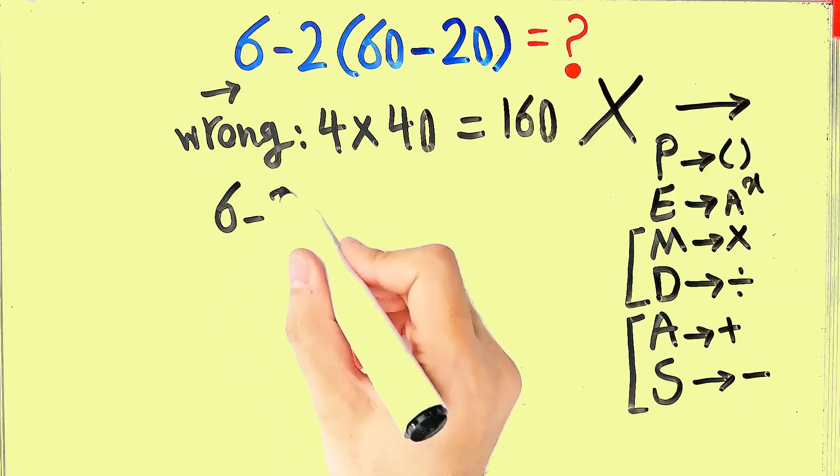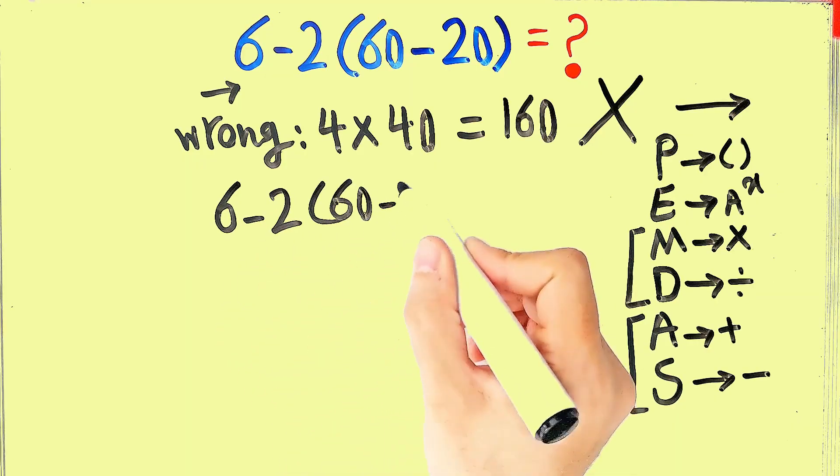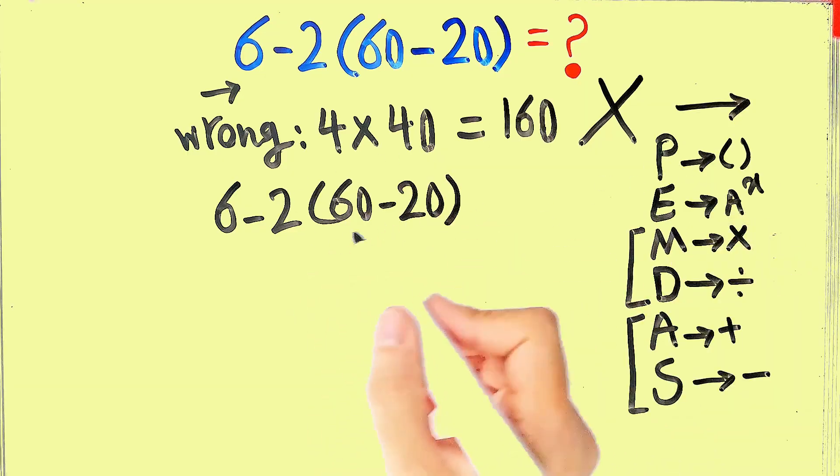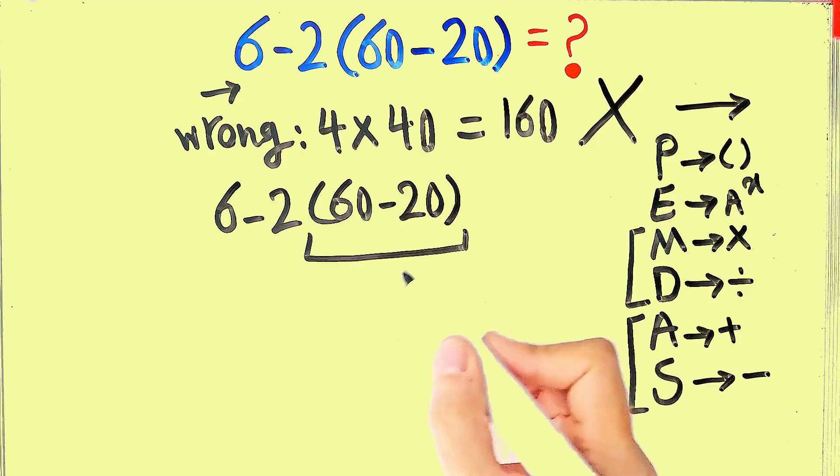The question is 6 minus 2 then times 60 minus 20. According to the PEMDAS rule, first we simplify the parentheses. 60 minus 20 equals 40.